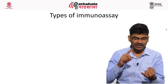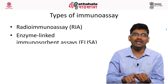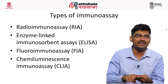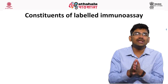The four types of immunoassay are: RIA, that is radioactive immunoassay; ELISA, enzyme-linked immunosorbent assay; FIA, fluoroimmunoassay; and CLIA, that is chemiluminescence immunoassay.